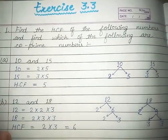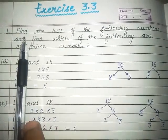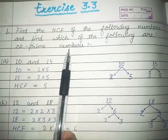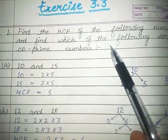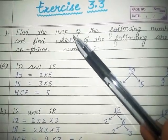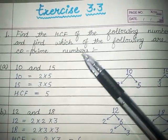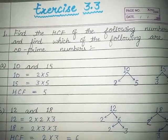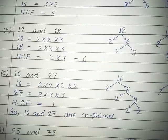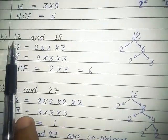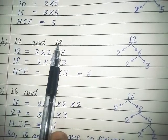So let's start. Here is the first question: find the HCF of the following numbers and find which of the following are co-prime numbers. You will find out the HCF and also know which of the numbers are co-prime. We will take the second sum: 12 and 18. Find the HCF of 12 and 18.